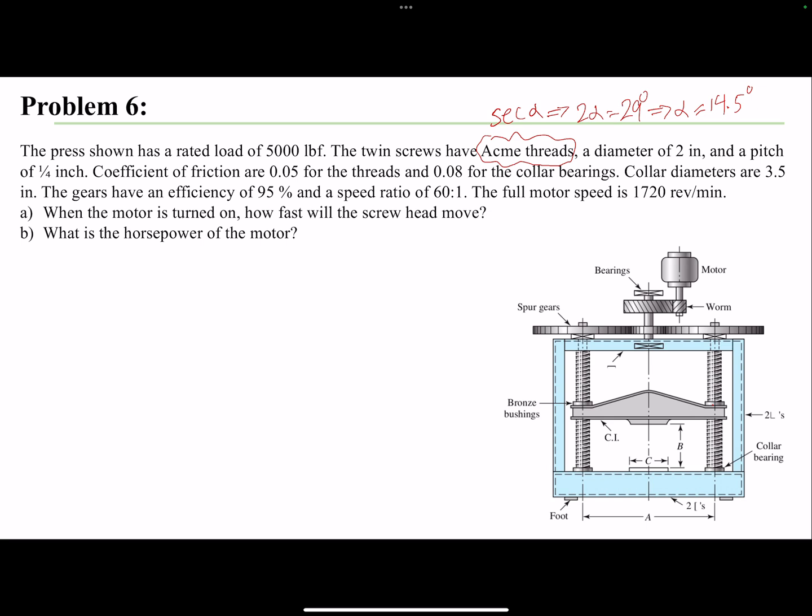A diameter of 2 inches, so that's the diameter of our screws, and a pitch of 1/4 inch. The coefficient of friction are 0.05 for the threads and 0.08 for the collar bearings. So these are the collar bearings and these are the threads that are engaged here.